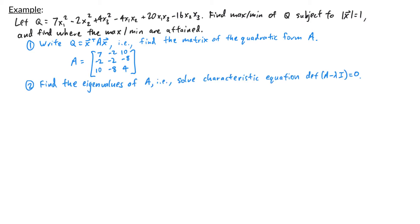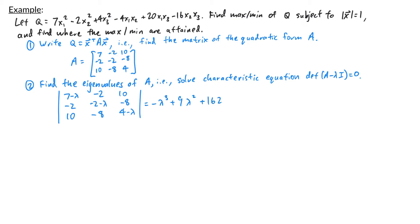To find the maximum and minimum value of q subject to the length of x equal to 1, I need to find the largest and smallest eigenvalue of A. I'll solve the characteristic equation det(A − λI) = 0. Looking at the determinant of the matrix with entries (7−λ, −2, 10; −2, −2−λ, −8; 10, −8, 4−λ), if you calculate this determinant you get −λ³ + 9λ² + 162λ. Factoring gives −λ(λ + 9)(λ − 18). Setting this equal to 0 and solving gives λ equals 0, negative 9, and positive 18.